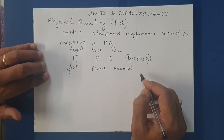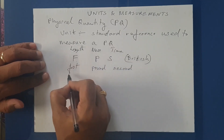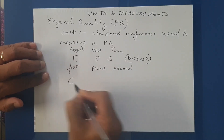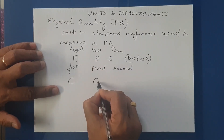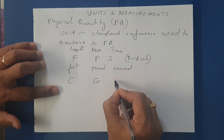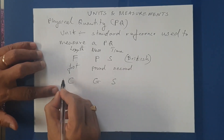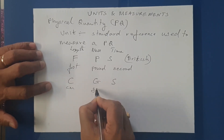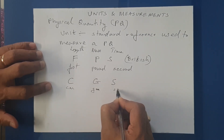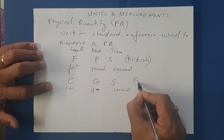The French and their colonies used to measure length in centimeters, mass in grams, and time in seconds. This is the CGS system — centimeter, gram, second — followed by the French.